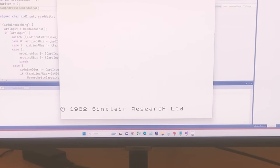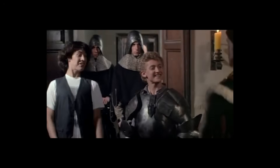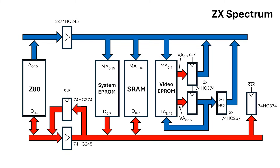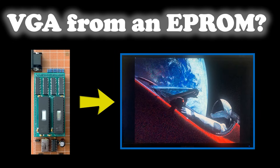Excellent — it looks like this bus sharing idea works, at least at low speed. I think that's pretty good progress for this video. In the next video, I'll have a go at getting the ScanOut circuit to work. In the meantime, I would encourage you again to have a look at the VGA from an EPROM video shown here. As always, don't forget to like, share and subscribe.